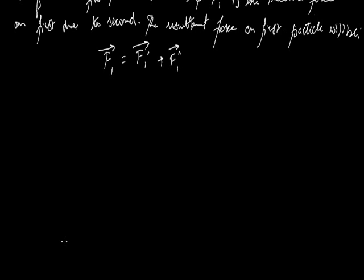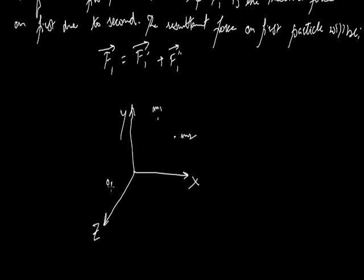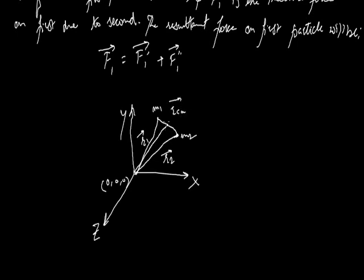We can draw a diagram with the y-axis and the two-particle system. Mass M1 is at the origin. M1 has a position from origin given by position vector R1. M2 has a position from origin given by position vector R2. The center of mass must lie on the line connecting both masses M1 and M2. The position of the center of mass is represented by the vector Rcm at point C.